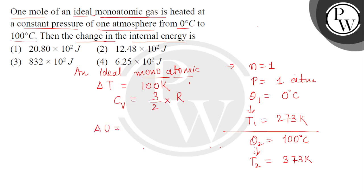So the change in internal energy is n multiplied by Cv multiplied by ΔT. So n, the number of moles is 1, Cv is 3R divided by 2, and the change in temperature in absolute scale is 100 Kelvin. And the SI unit of the change in internal energy will be Joule.